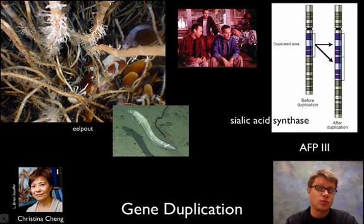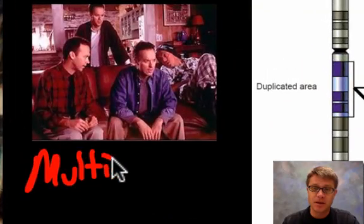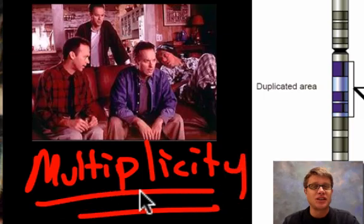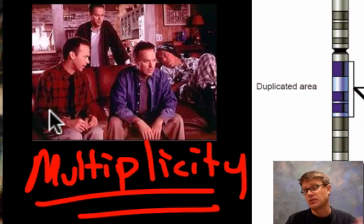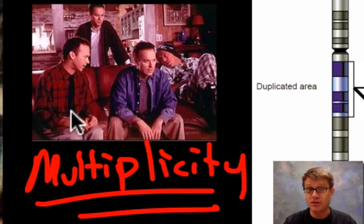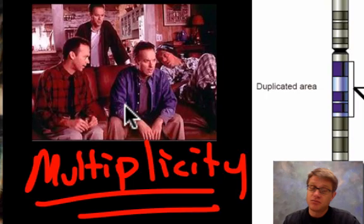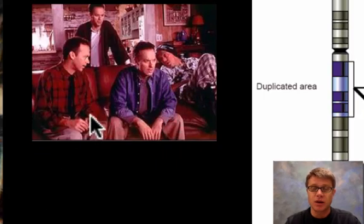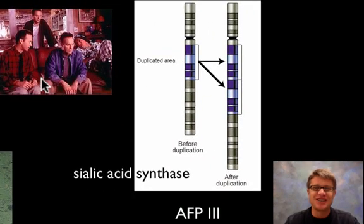The last topic is gene duplication, and I want to start with an analogy. Most of you have never seen the movie Multiplicity — it's a Michael Keaton comedy. He discovers how to make a clone of himself: one clone goes to school and teaches, one makes podcasts, one cleans his house, so he can do what he wants in life. Of course it's a comedy, so the clones get dumber and dumber over time, they make clones of themselves, and it spirals out of control.